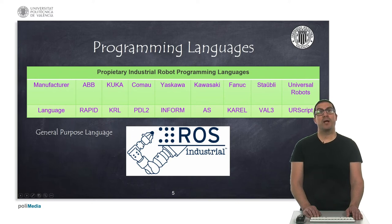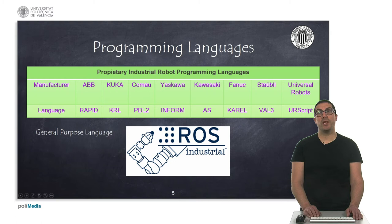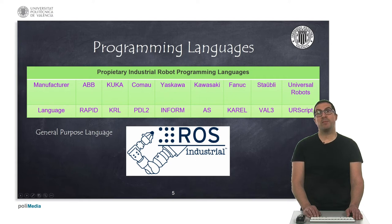Each robot manufacturer has its own programming language, which means there is no standardization in this regard, although they all share a common set of elements such as instructions for coordinated and uncoordinated movement of robot joints, definition of robot configurations, maximum speeds and accelerations, admissible accuracy, etc. Here I show the names of main robot manufacturers and their corresponding language names.